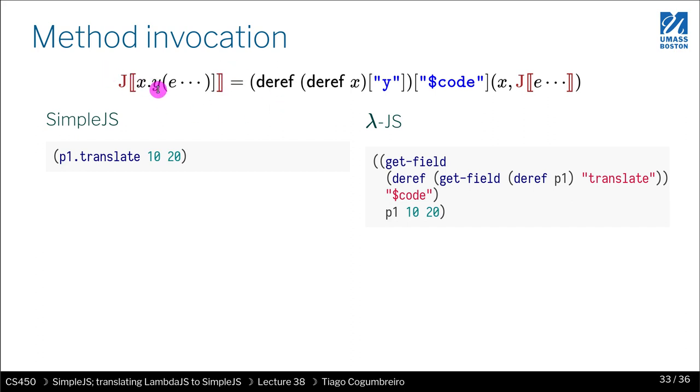Whenever we're calling a method, we need to dereference the object, and then we need to dereference the fields. Because the field is another function, we need to dereference that. And then we need to translate basically all the parameters, and we need to add the this again. In the gist, that's what we're doing.